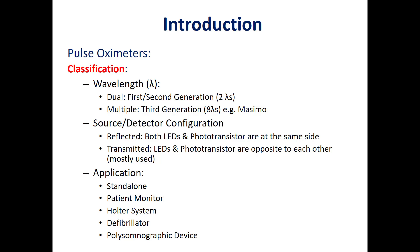One classification is according to the number of wavelengths. We can have the pulse oximeter which uses two wavelengths, known as the first and second generation.